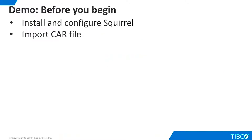This demo uses data from the examples folder that is delivered with TDV, so no installation of data is required. However, if you want to run the demo exactly as we show it here, you will need Squirrel, a generic SQL query tool. In addition, a car file is available in the additional resources folder that accompanies this demoette. You can build these resources from scratch or import the car file if you want to use the pre-built artifacts. Instructions for these steps can be found in the additional resources folder that accompanies this demoette.